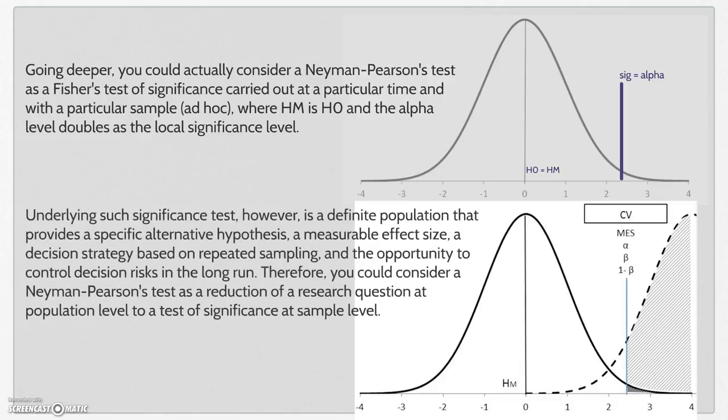Underlying such significance test, however, is a definite population that provides a specific alternative hypothesis, a measurable effect size, a decision strategy based on repeated sampling, and the opportunity to control decision risk in the long run.